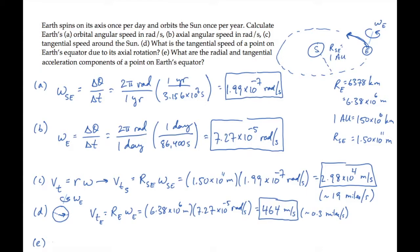Finally, Part E asks us for the components of a point's acceleration on the Earth's equator. The radial component is v squared over r, that's r omega squared. And we can substitute values to see that equals 0.0337 meters per second squared.